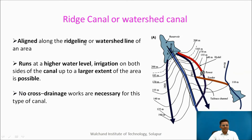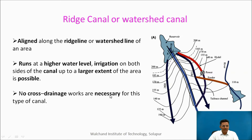Let us see a ridge canal or watershed canal. After construction of a dam, the water level is raised and the canal is brought on the ridge. A ridge can be identified from the pattern of contours. The canal is brought on the ridge so that it irrigates both sides of the canal — that is the advantage area. No cross drainage works are necessary for this type of canal because it passes over a ridge, which is also an advantage.